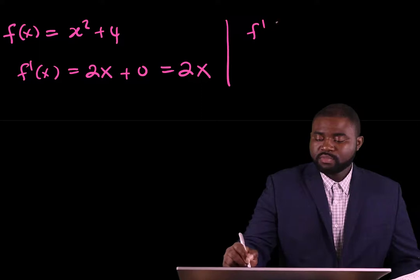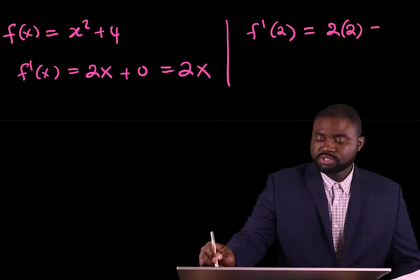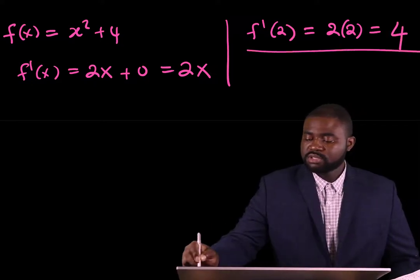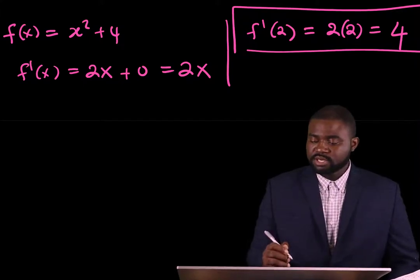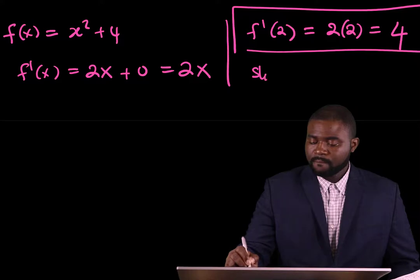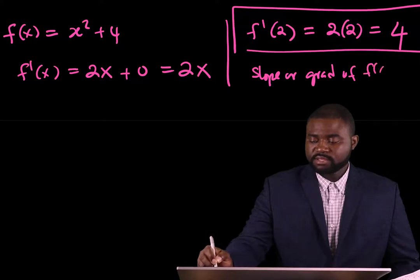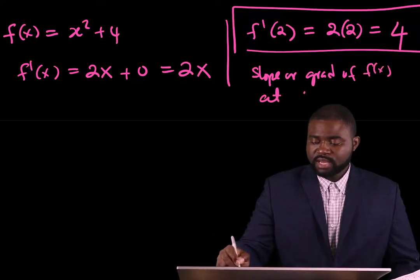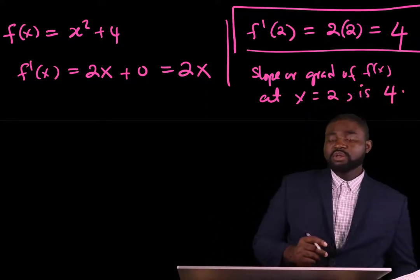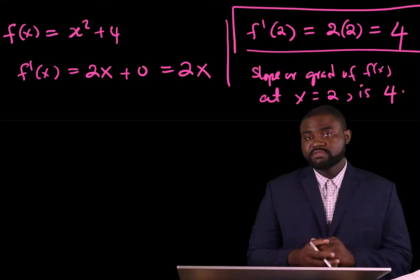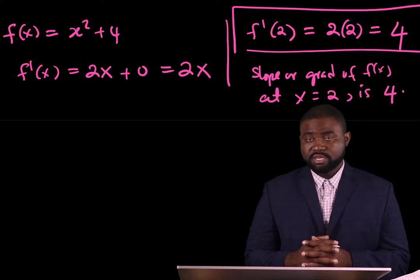Then f prime of 2 is going to be 2 multiplied by 2, which is equal to 4. So the question is, what does this 4 mean? It simply implies that the slope or gradient of f of x at x equal to 2 is 4. In other words, differentiation of a function at a particular point gives us the slope of that function at that particular point.